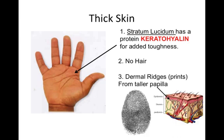Thick skin also has dermal ridges or prints. You've undoubtedly seen these as fingerprints, but they're on the soles of your feet and the palms of your hands as well. These are formed from tall dermal papilla — finger-like projections at the boundary between the dermis and epidermal layer. Dermal papilla are all over the body but are more pronounced in thick skin.